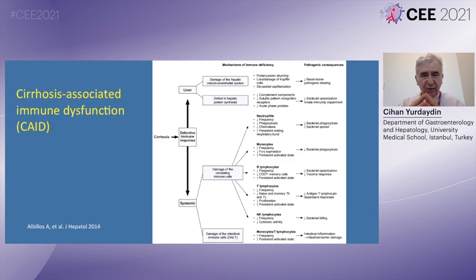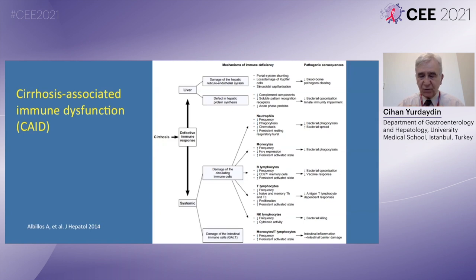Why is cirrhosis associated with higher mortality? It is basically due to cirrhosis-associated immune dysfunction, and how this causes disease — as depicted in this cartoon — showing defects in immune response not only locally in the liver, but also systemic effects, where portosystemic shunting and defects in hepatic protein synthesis contribute to this cirrhosis-associated immune dysfunction.